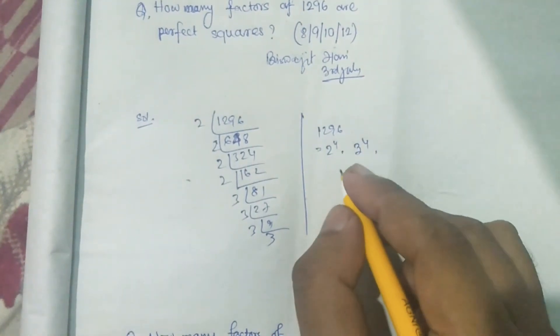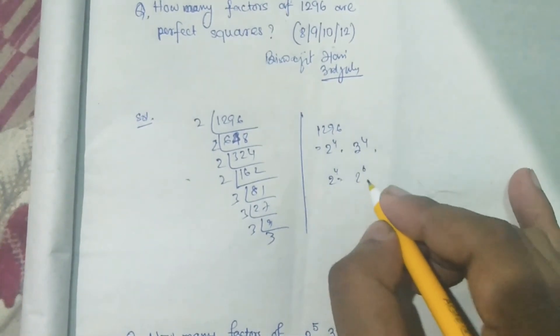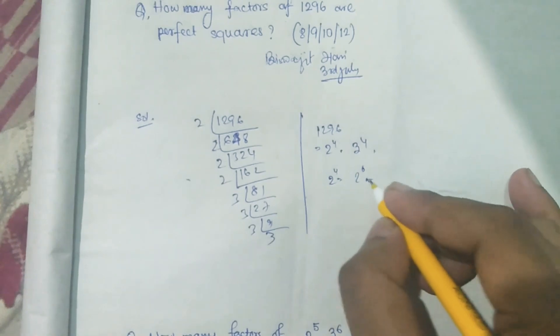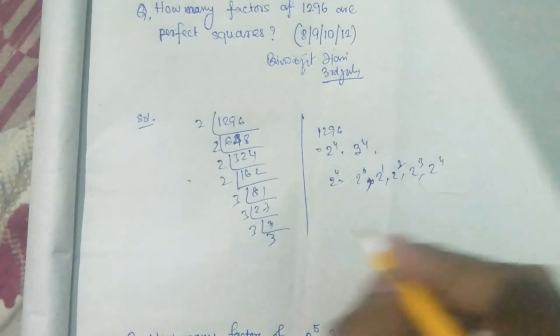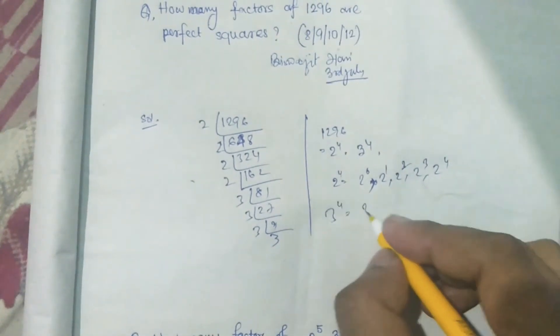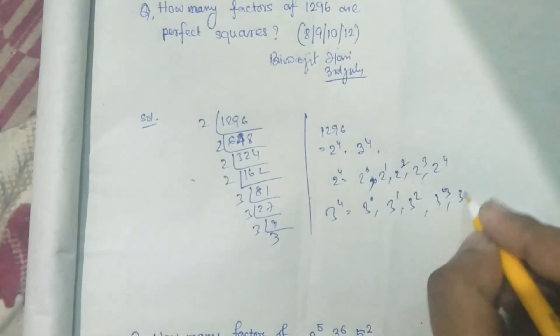So, we see that 2 to the power 4, I mean 2 to the power 0, 2 to the power 2, 2 to the power 3, 2 to the power 4. 3 to the power 4 means 3 to the power 0, 3 to the power 1, 3 to the power 2, 3 to the power 3, 3 to the power 4.